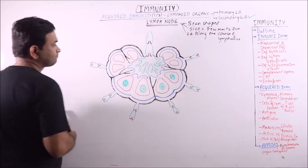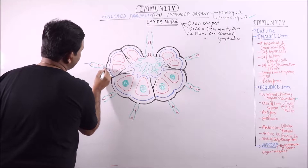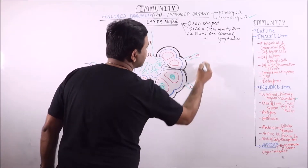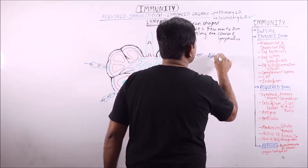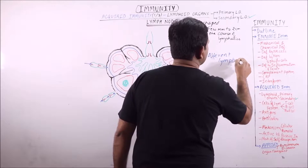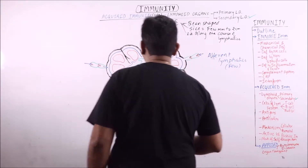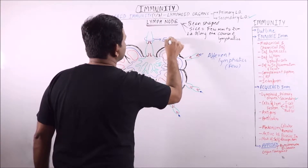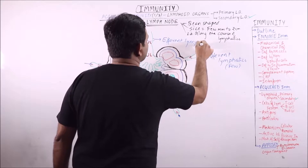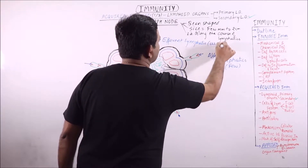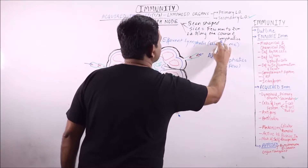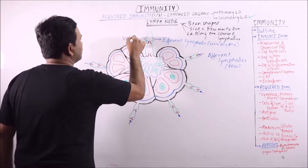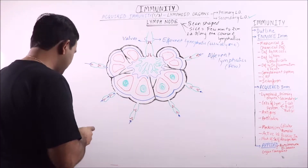The lymph will flow into the lymph node via these lymphatics, which are known as afferent lymphatics. Afferent lymphatics are usually 1, rarely 2 in number. These are the valves that will prevent the backflow of lymph, as the pressure is very low.